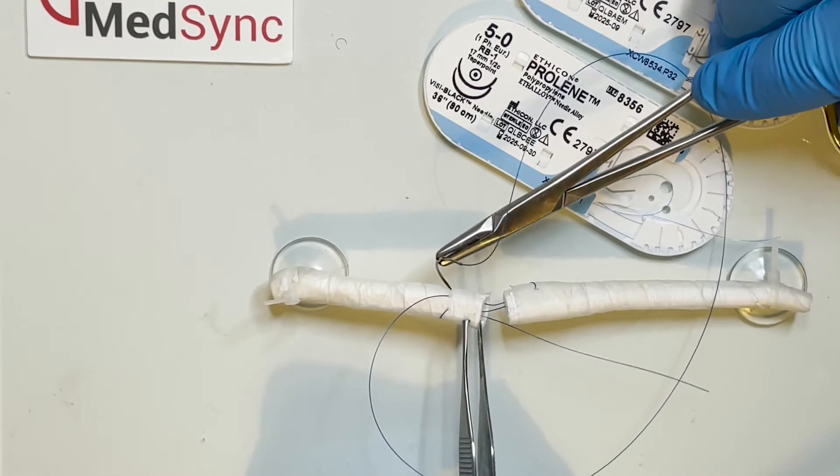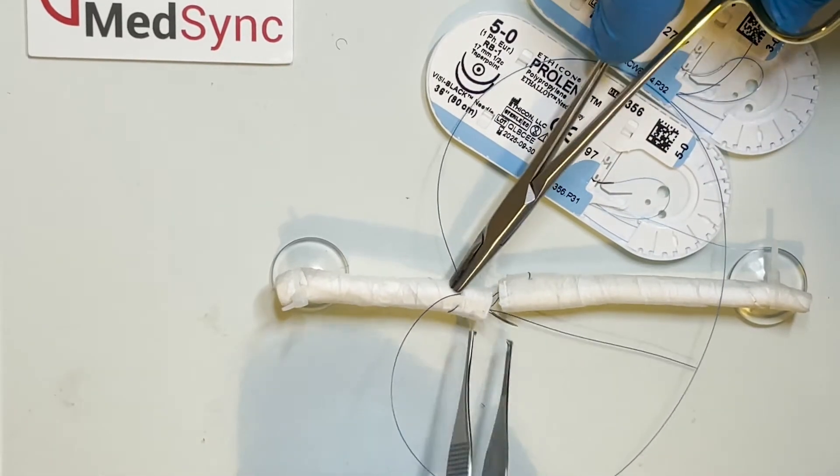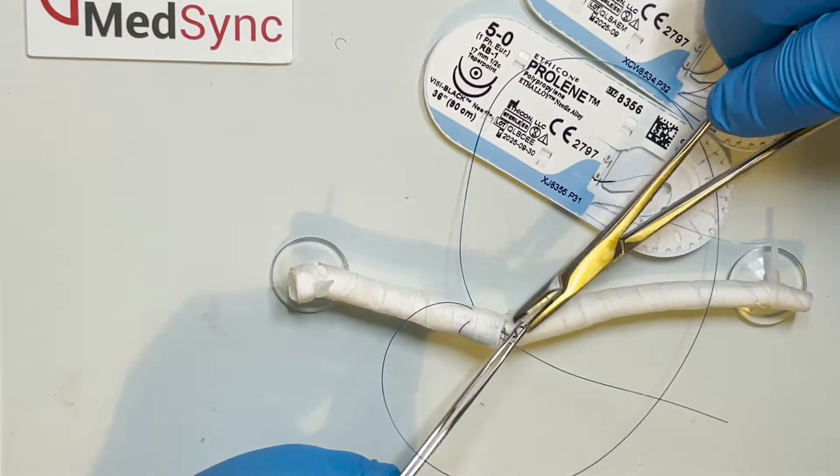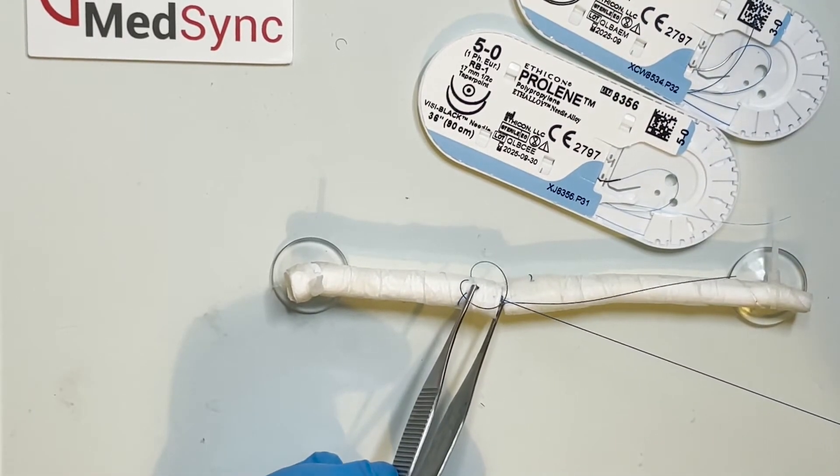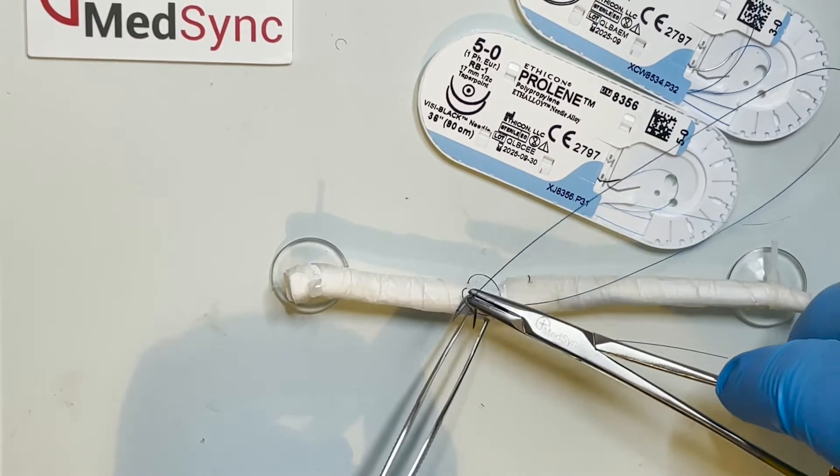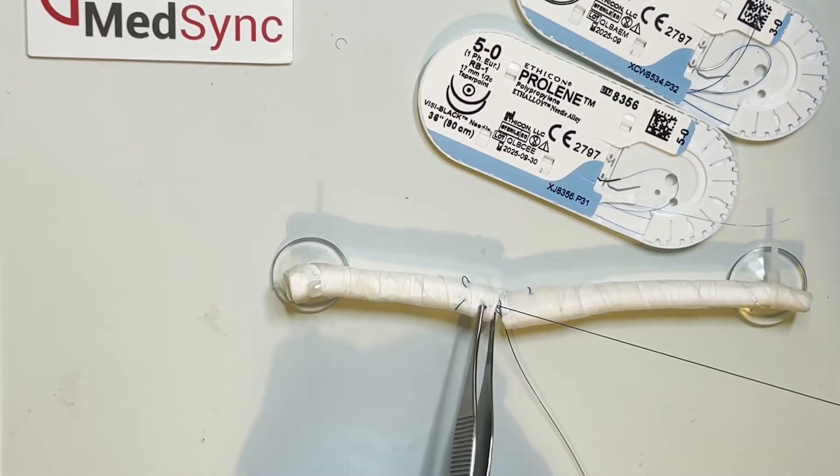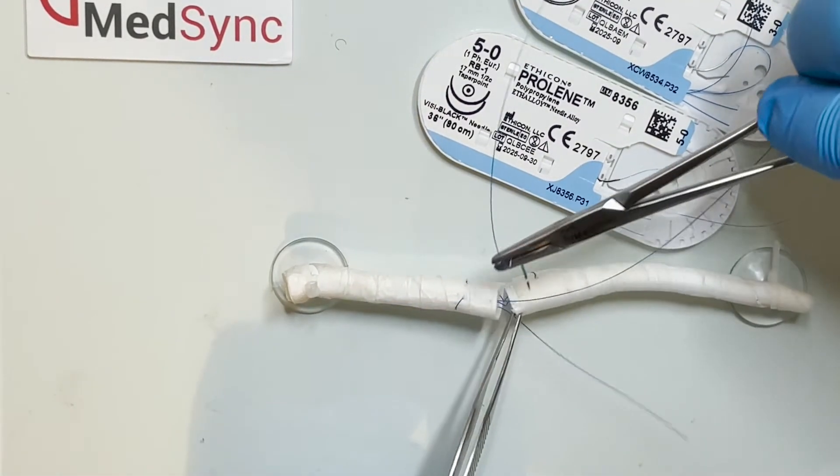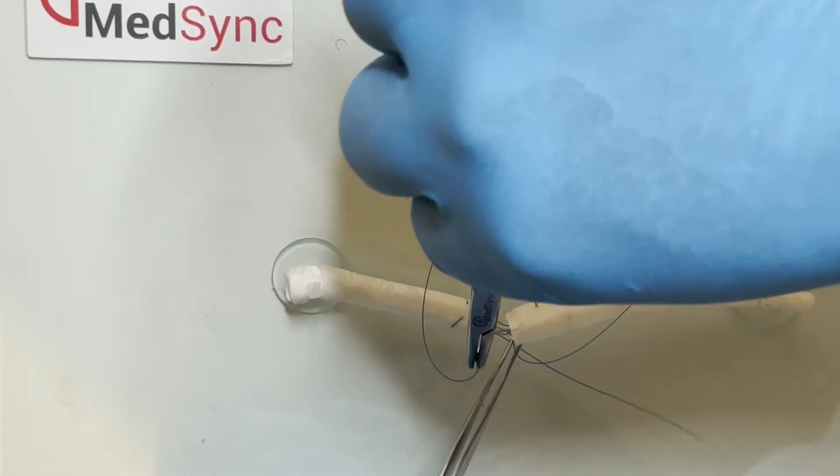An oblique pass is then made entering through the side of the tendon, across the repair site and into the other half of the divided tendon, exiting through the side.